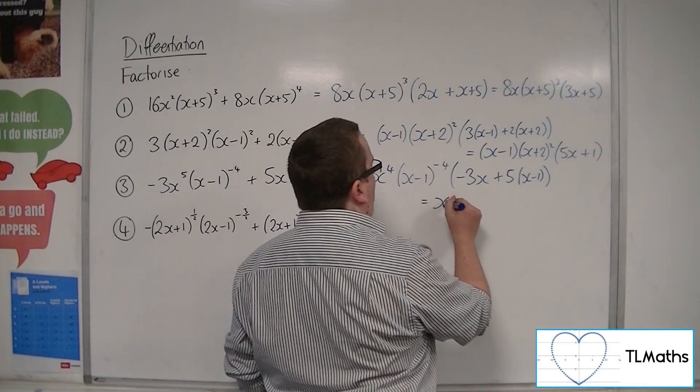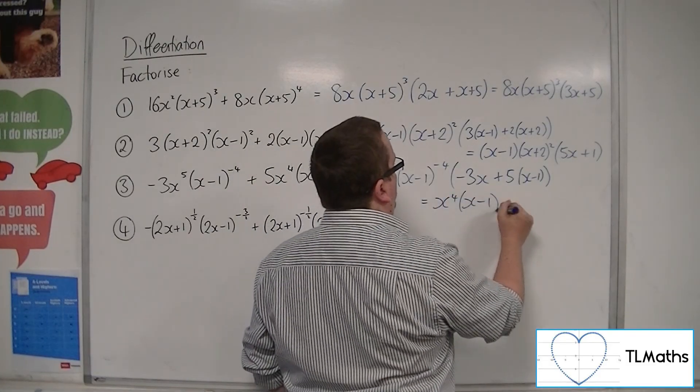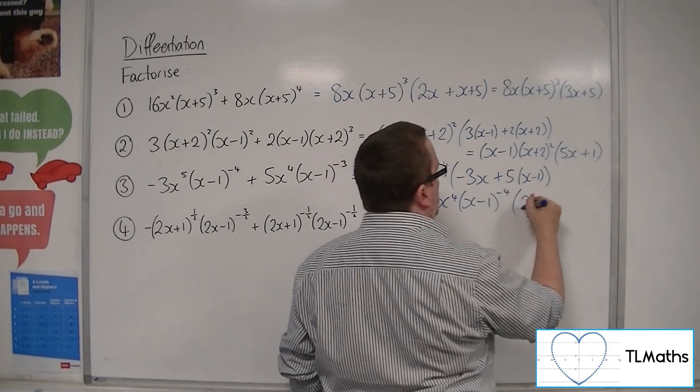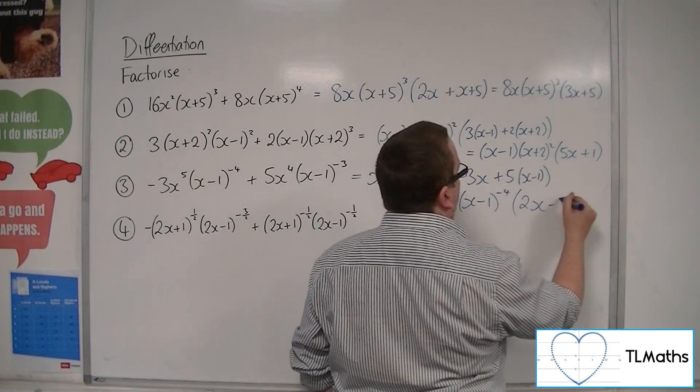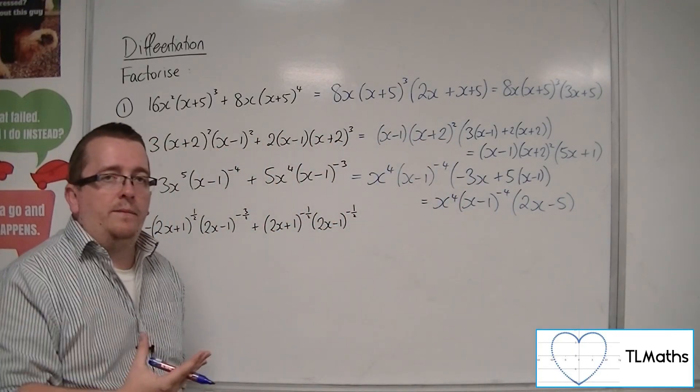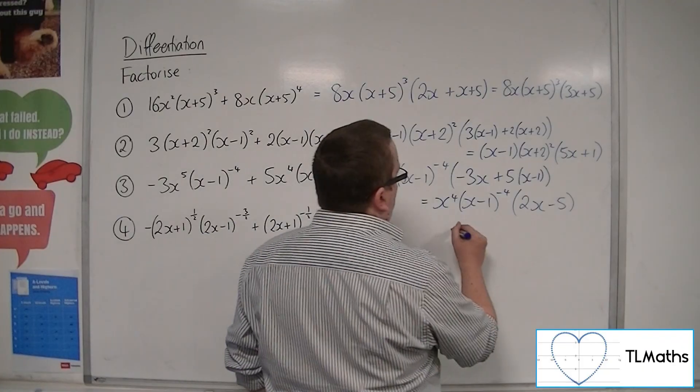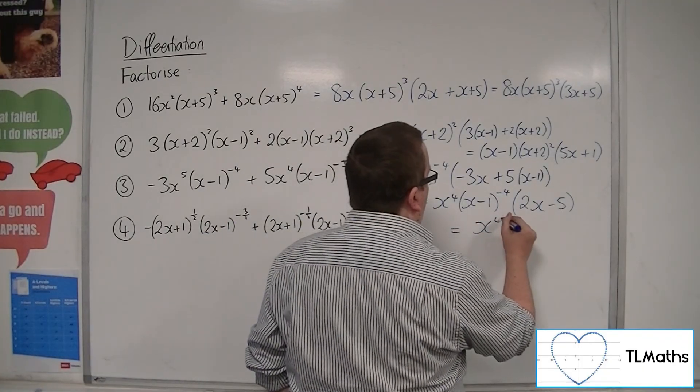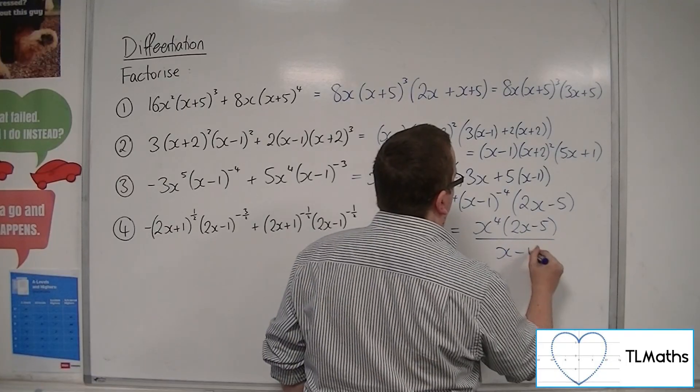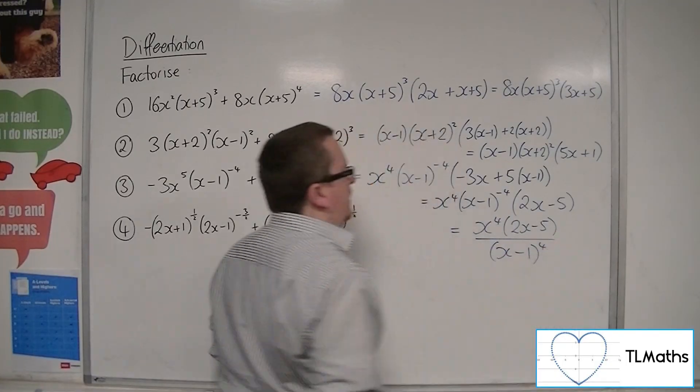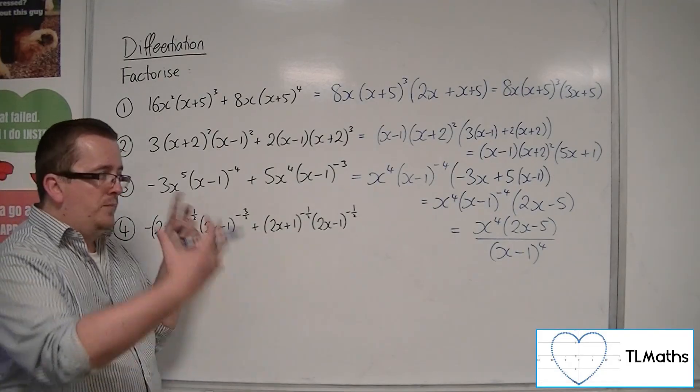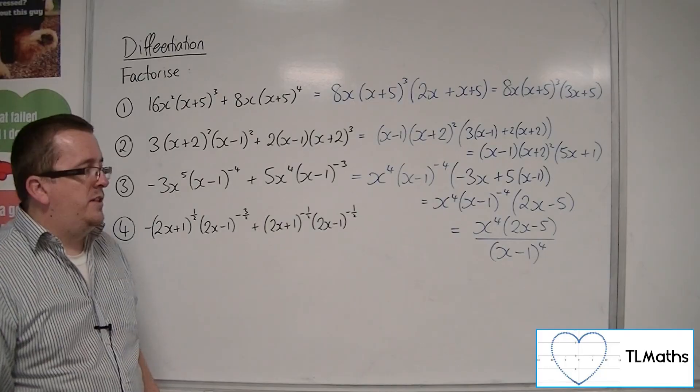So simplifying this, x⁴(x-1)^(-4), and we've got -3x plus 5x, so 2x, and then we're going to have a -5. So if I wanted to write it as a fraction, then this would look like x⁴(2x-5) over (x-1)⁴. That's what I would get if I wrote both of those as fractions, brought them under a common denominator.